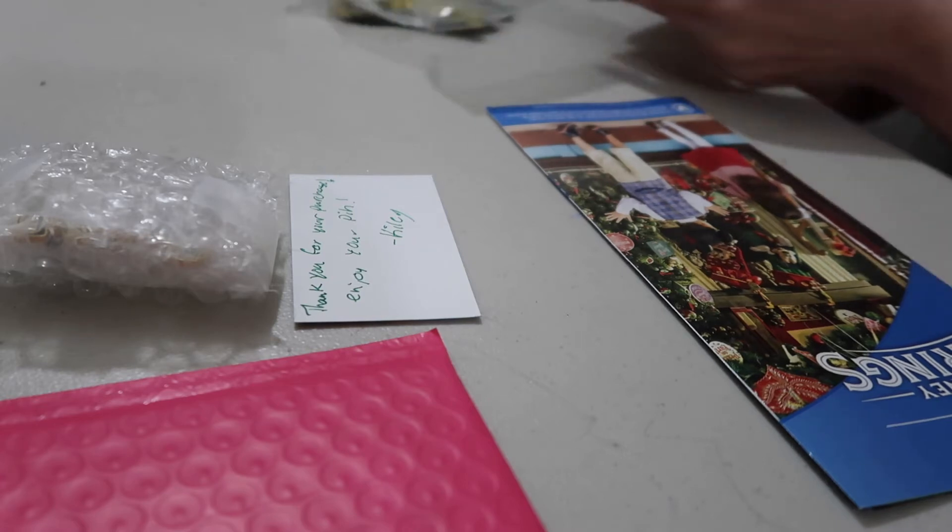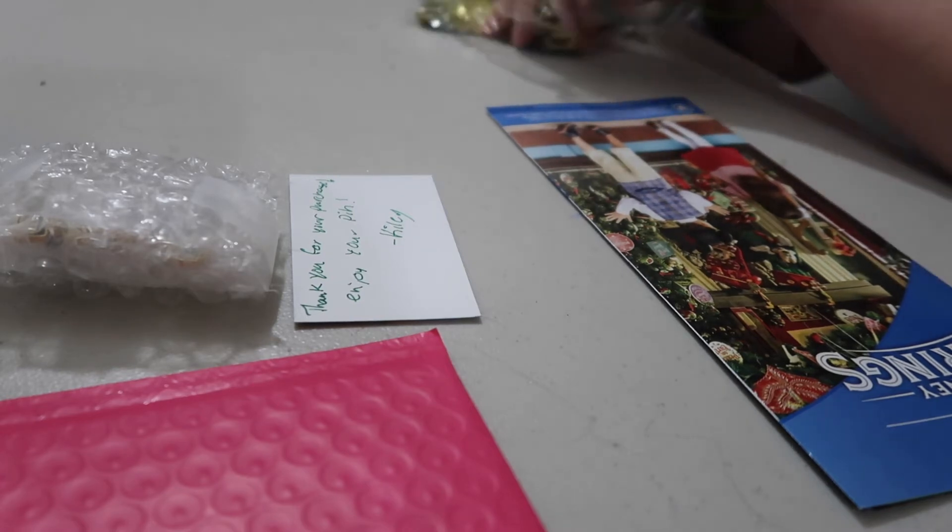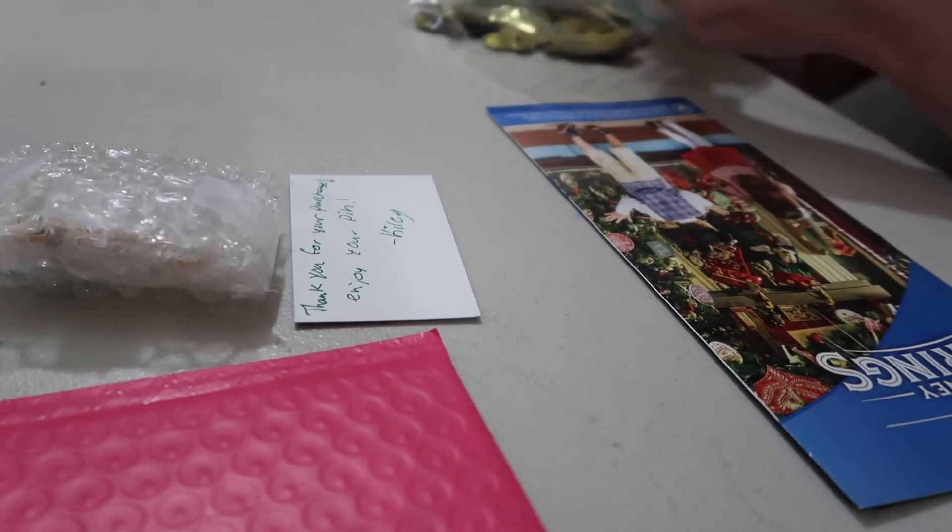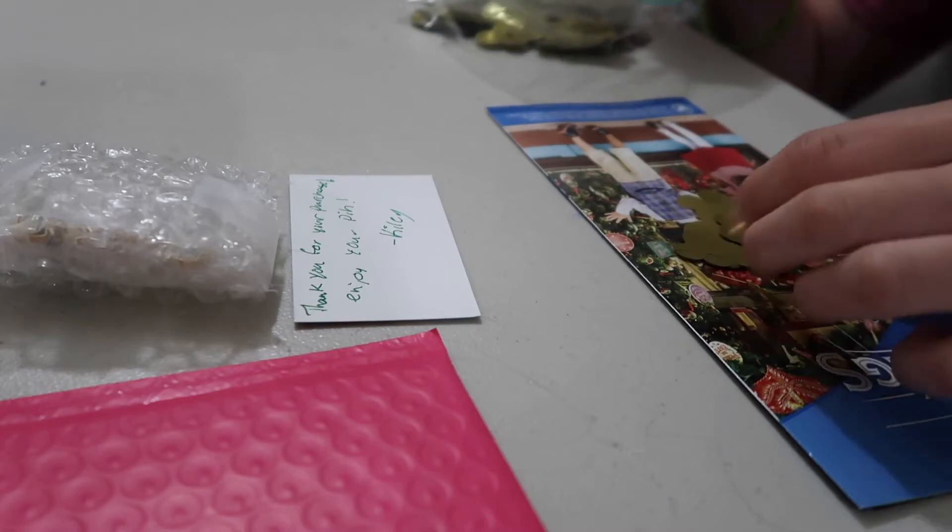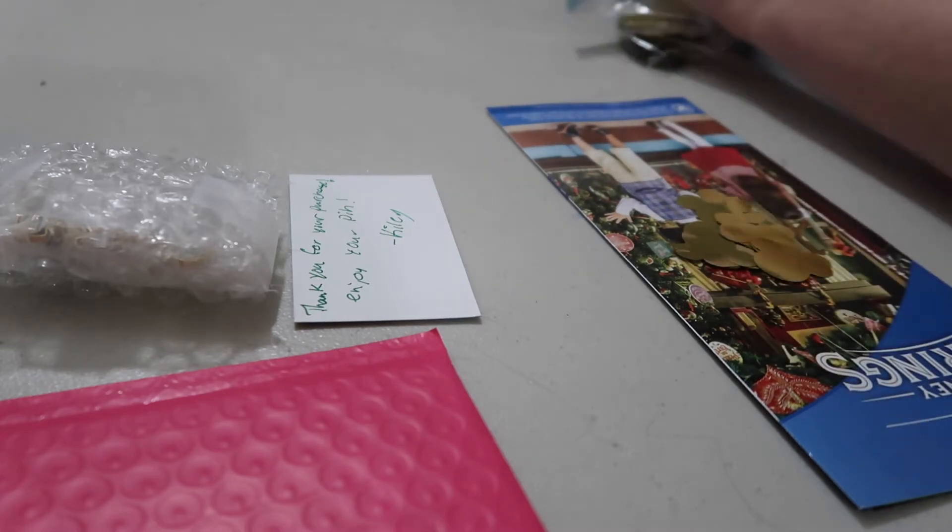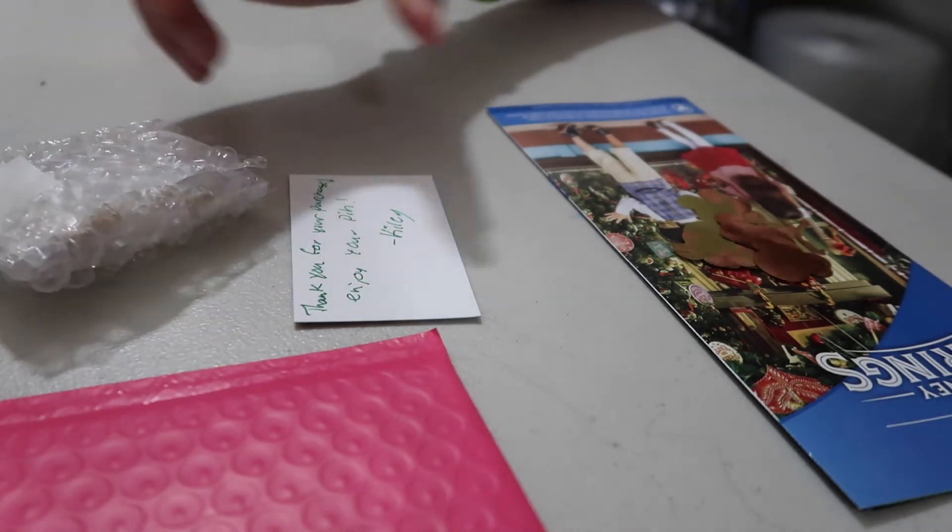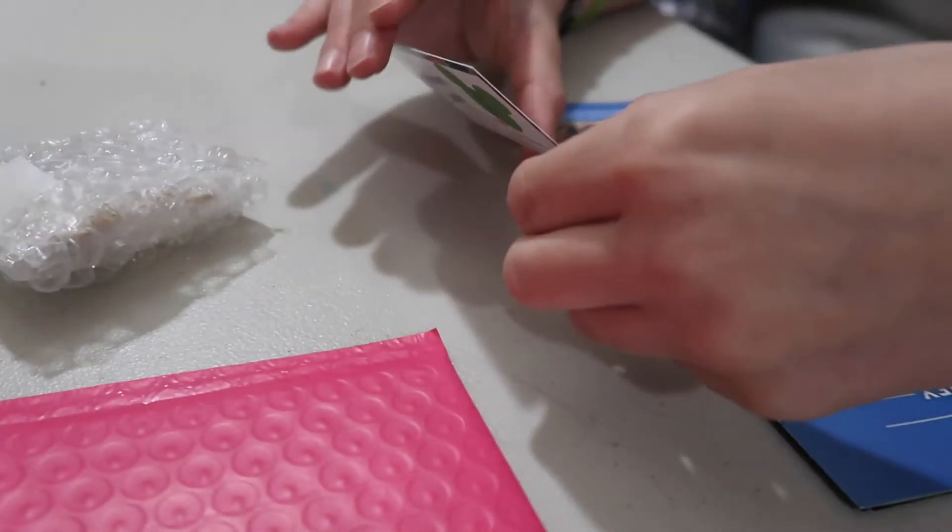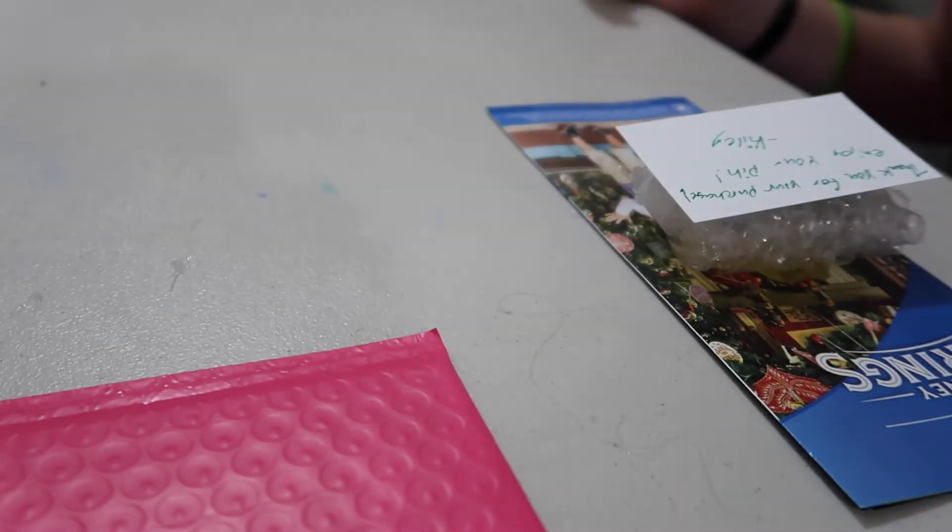So I usually throw in a park map and I throw in a few pieces of Mickey confetti. I have a bunch of Mickey confetti so I like to throw in a few pieces of that. If there's a more special occasion, if I'm just doing like one pin for some random person I usually don't, but I might as well do it right now to show you guys how I usually do it.